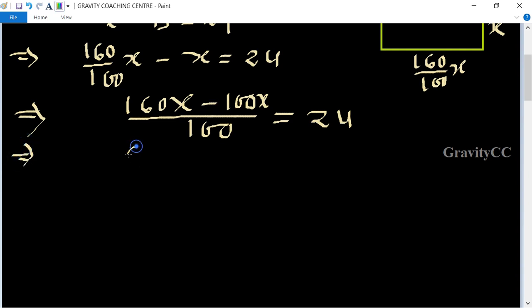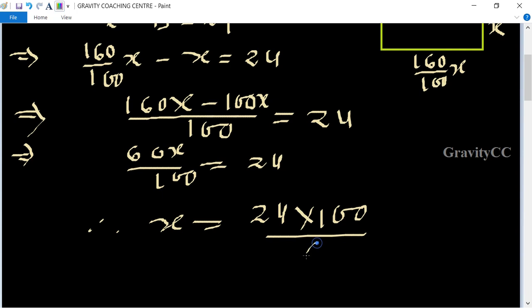Therefore x equal to 24 upon, multiply 100 upon 60. Zero zero cancel and six fours equal to 40. So the breadth of the rectangle is 40.